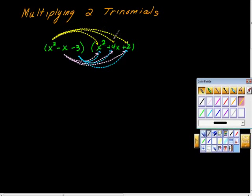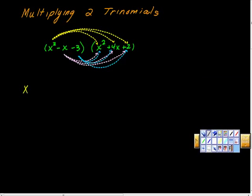So x squared times x squared is x to the fourth. I'm writing it in yellow because I'm following this yellow path. And then x squared times 4x—positive 4x cubed. And then x squared times positive 2—positive 2x squared. The reason I keep saying positive is so I don't forget to write this sign here. Otherwise, it gets really confusing.